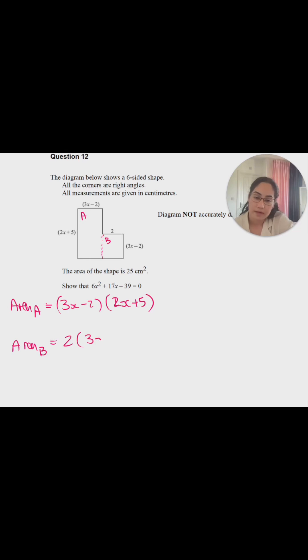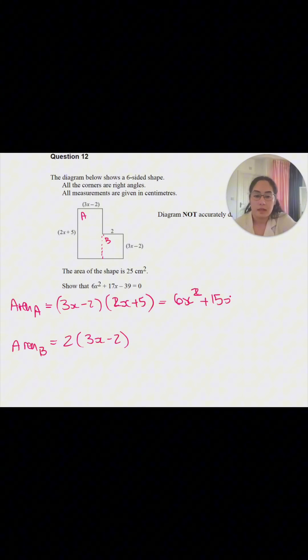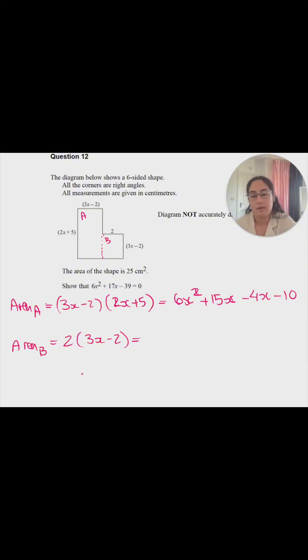First I'm going to expand these out. 3x times 2x gives me 6x², 3x times 5 is 15x, then minus 2 times 2x gives me -4x, and minus 2 times 5 gives us -10.